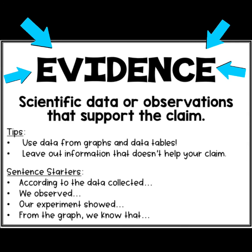Next you have evidence. Evidence is the scientific data or observations that support the claim. When we're talking about evidence, you are going to use data from graphs or data tables. This should be the easiest part of our writing because we're looking for that scientific evidence, that data, to help support your claim. Because we're tying this in with science and the environmental topics, there should be a ton of data about things happening in the environment, whatever topic you pick. The evidence is just scientific data that helps support your claim.